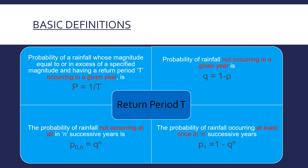Next, we want to know the probability of rainfall NOT occurring in a given year. In the same case — 50-centimeter rainfall with a 10-year return period — if every year has a 10% probability of occurring, then the probability of it not occurring is 1 minus 10%, which is 90%. So the probability of rainfall not occurring in a given year is Q = 1 − P, where P = 1/T.